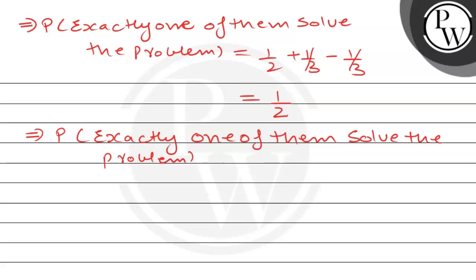Therefore, the probability that exactly one of them solves the problem equals 1/2. I hope you understood it. All the best, thank you.